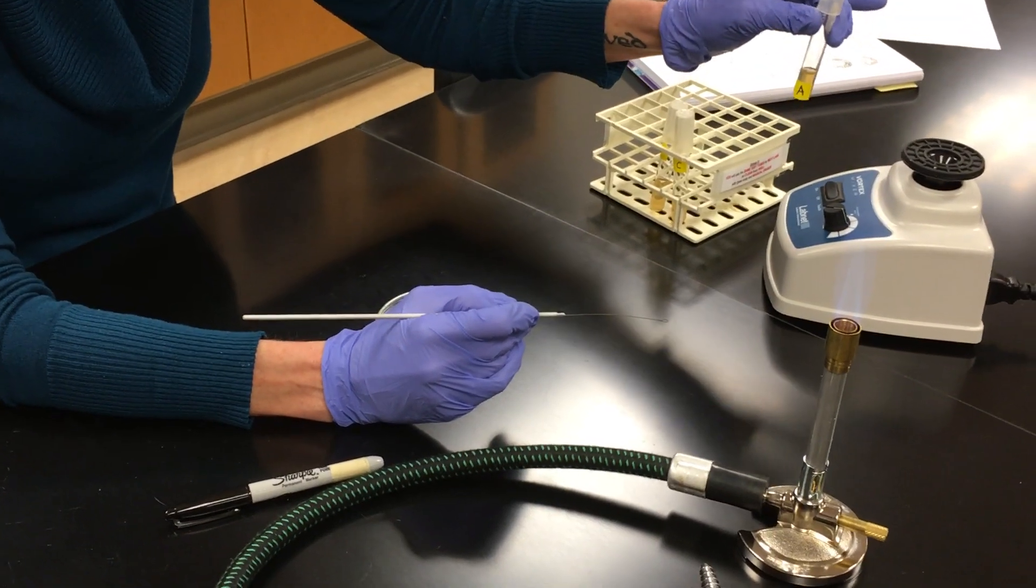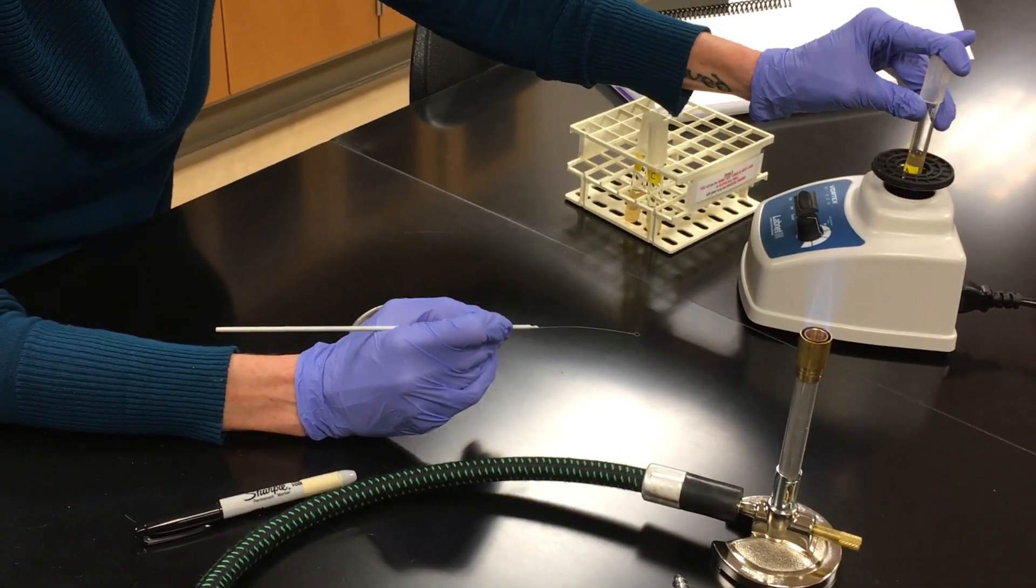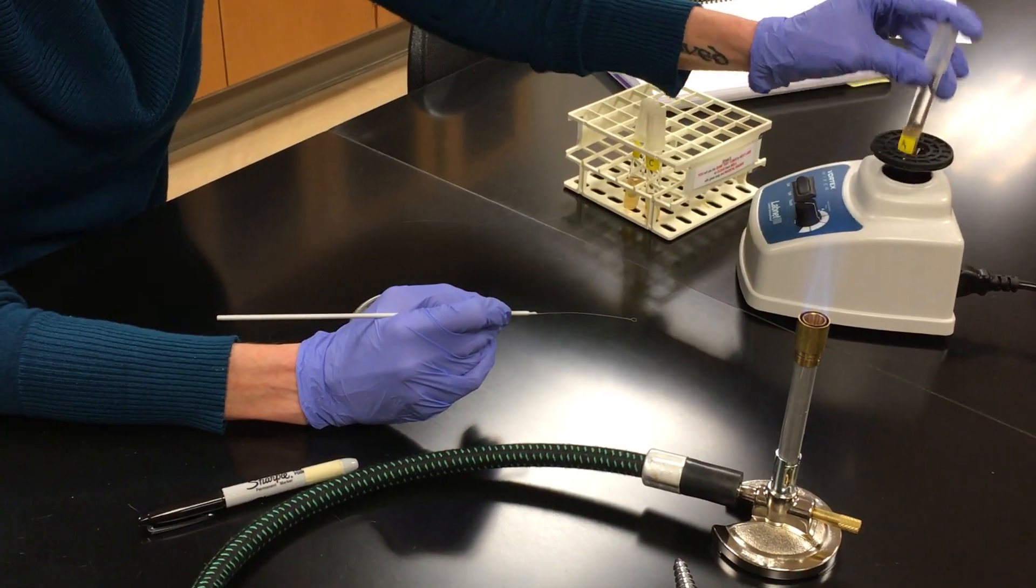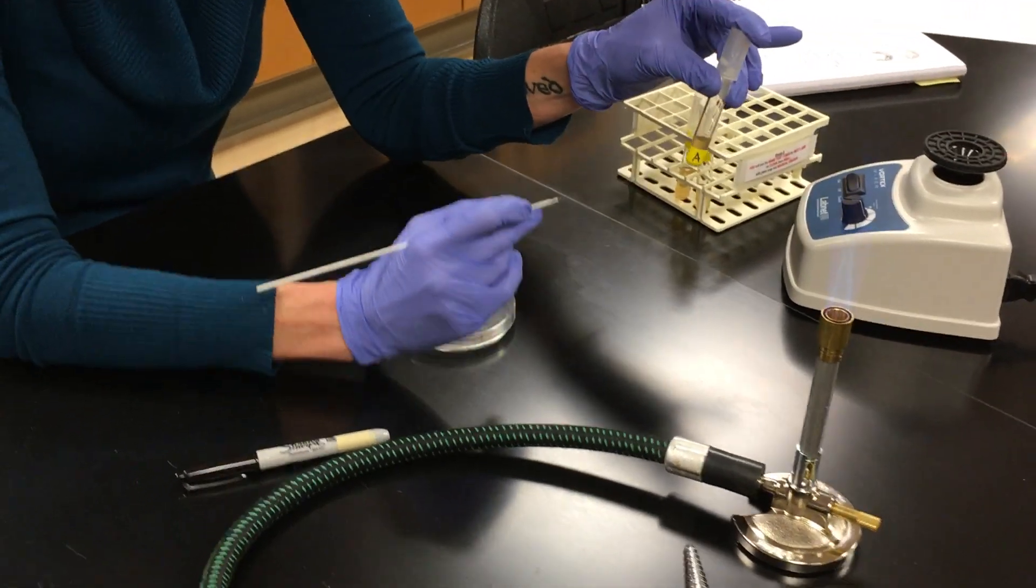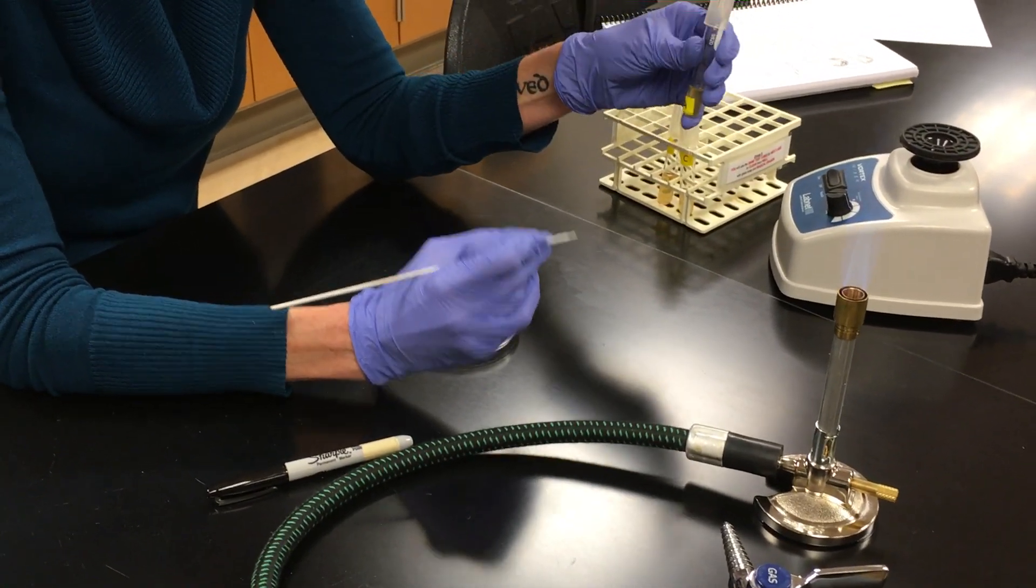You're going to hold the tube in the middle, put your finger on the cap, and all you need to do is push. And all we're doing is we are mixing up the culture to evenly disperse the two different bacteria in that culture tube. So we have a mixed culture tube.